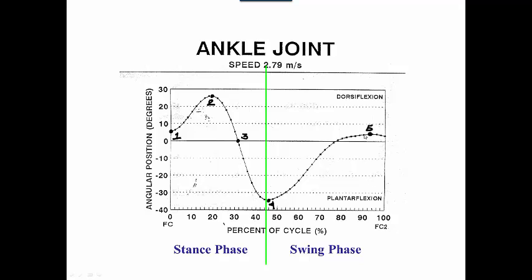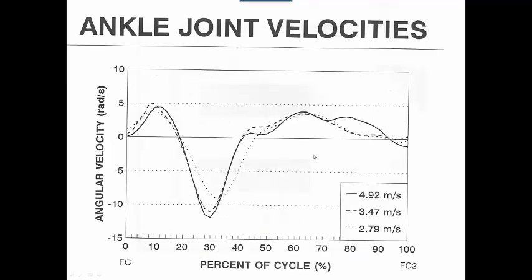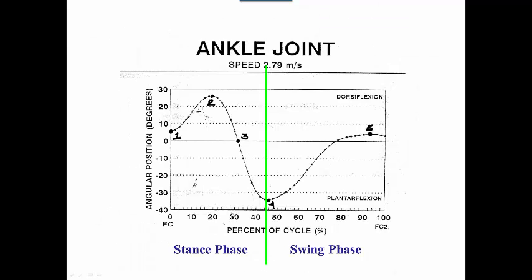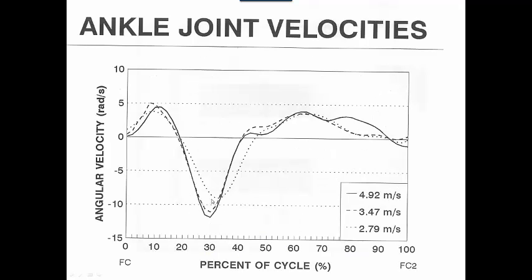So where would the points of zero velocity be? It could be point 1, most definitely point 2, point 4, and point 5. The greatest plantar flexion velocity would be somewhere around 30% of the cycle — we can see this big peak of negative velocity around 30%. And the greatest dorsiflexion velocity would probably be somewhere around 60 to 70% of the cycle.